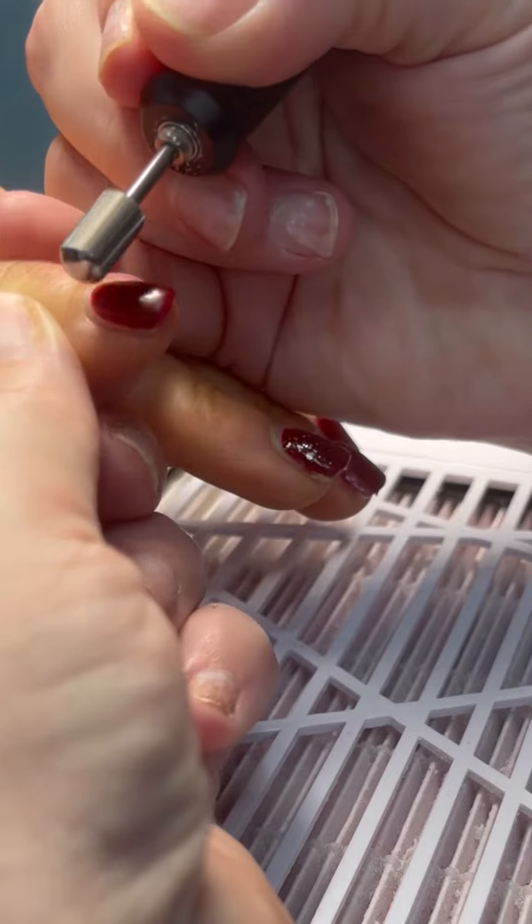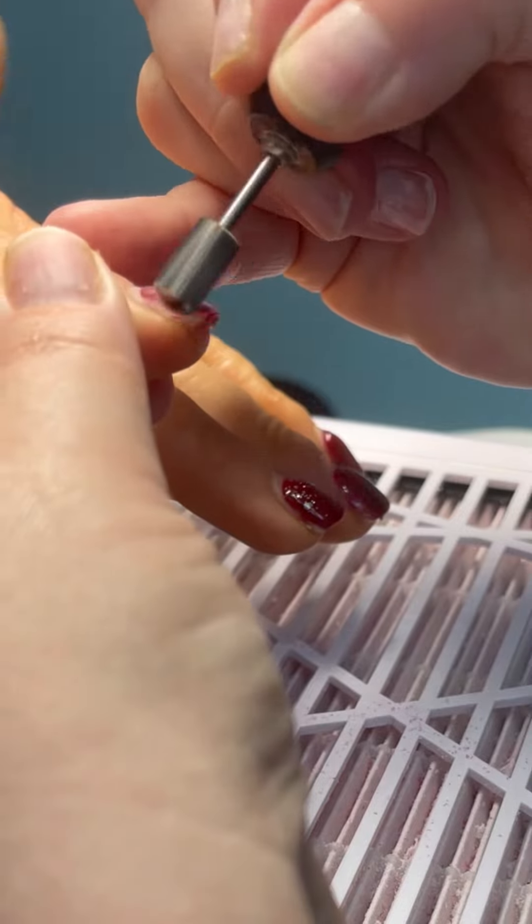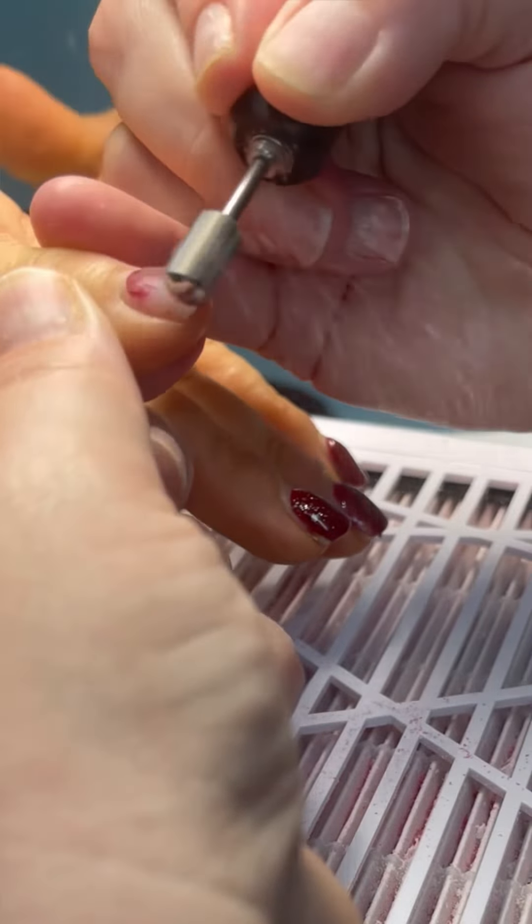Come and infill this builder gel set with me. You're going to start by removing the color and some of the bulk. I'll leave a little bit on there, but I'll try and take most of it off.